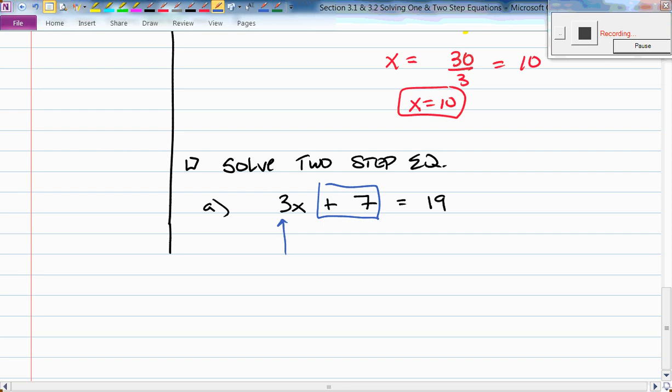What's the inverse of adding 7? Subtracting 7. If I have 3x plus 7 equals 19, I could subtract 7 vertically. So I'm working vertically now. That gives me 3x. 7 take away 7 is 0 equals 19 take away 7, which is 12. Very good.